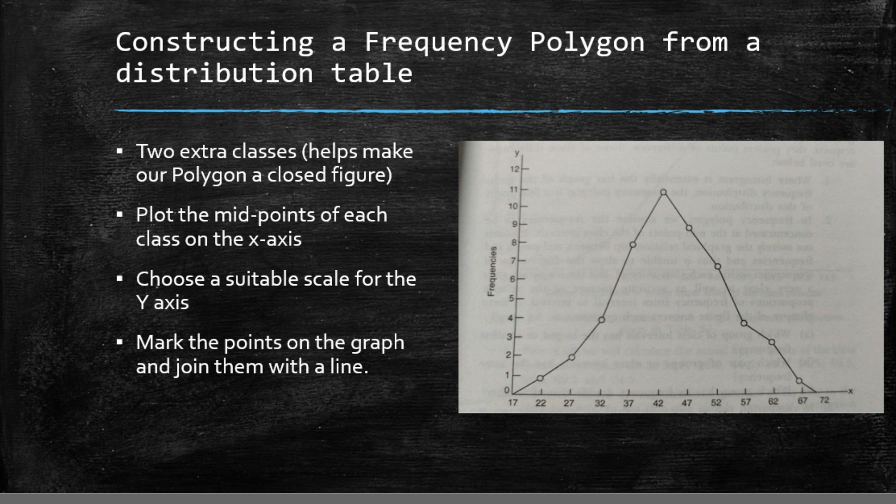Then plot the midpoints of each class along the x-axis and choose a suitable scale for the y-axis. Now locate the points in the graph and join every subsequent pair of them with a straight line as depicted in the figure.